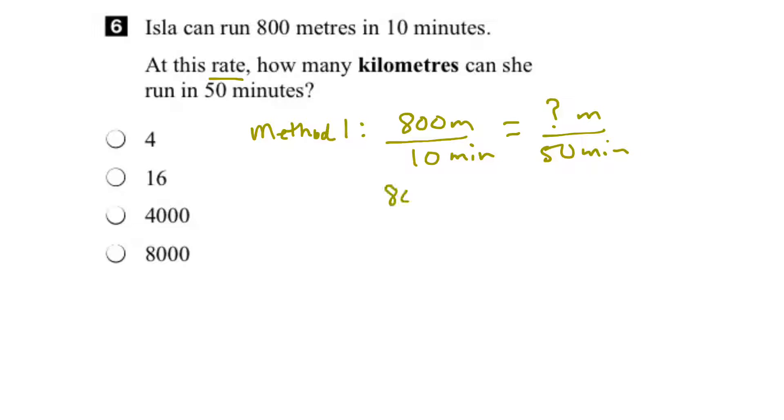So this would give us 800 meters times 50 minutes divided by 10 minutes equals the total number of meters. Now it's really important to keep the units here because it'll help us to make sure we're on the right track. So what we can determine here is that the minutes would cancel out. 10 goes into here once, goes into 5 five times, so this becomes 800 meters times 5 equals the unknown number of meters traveled. So 800 times 5 is 4,000 meters.